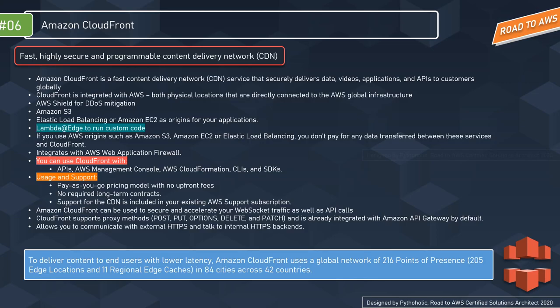CloudFront works seamlessly with services including AWS Shield for DDoS mitigation, AWS S3, Elastic Load Balancing, and Amazon EC2 as origins for your application. The origin is the source of your content — it can be your S3 bucket, a load balancer, or an EC2 instance. You can also use Lambda at Edge to run customized code close to your customers for customer-specific customization.